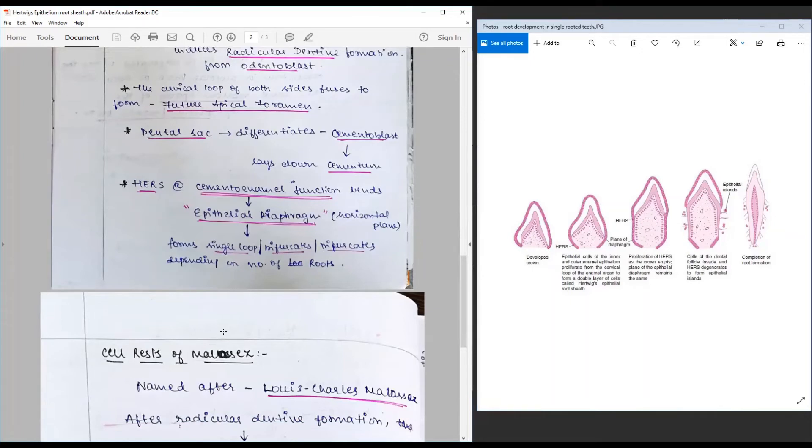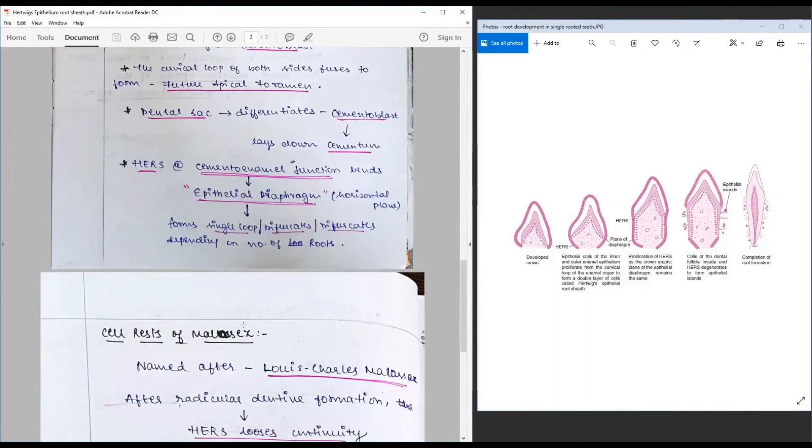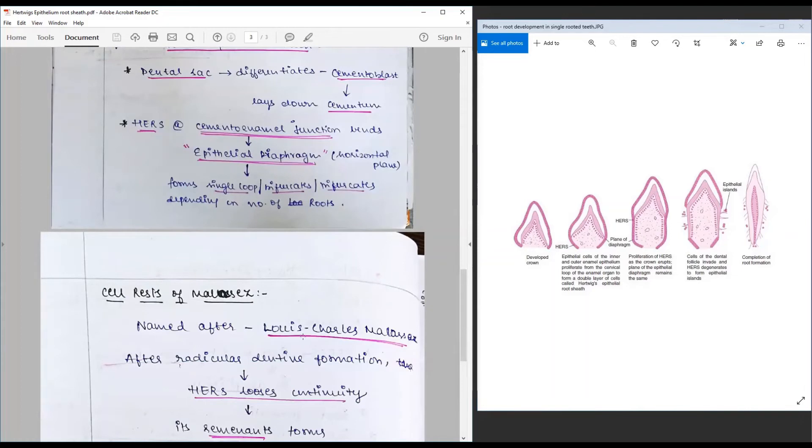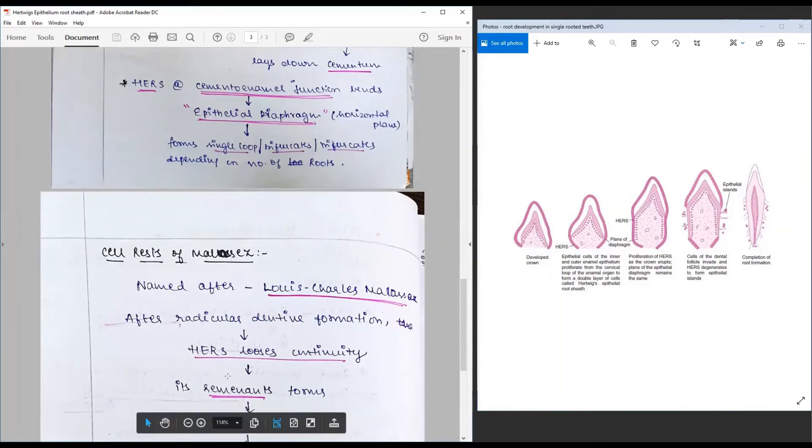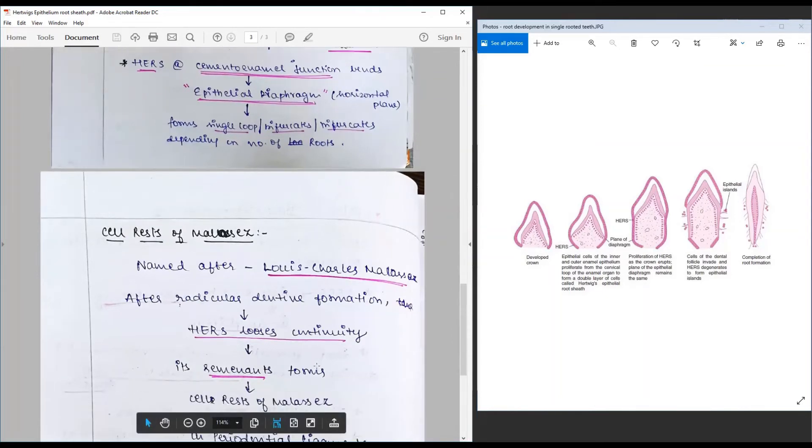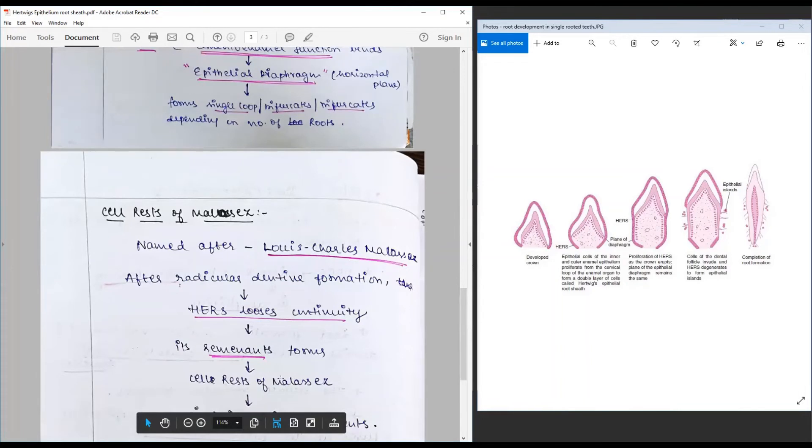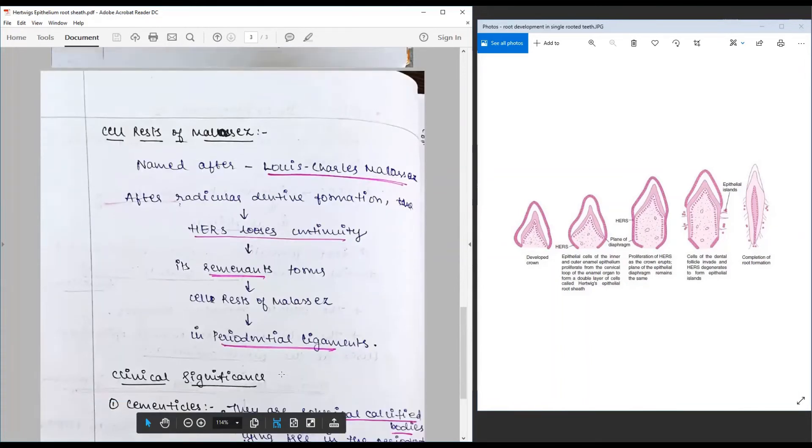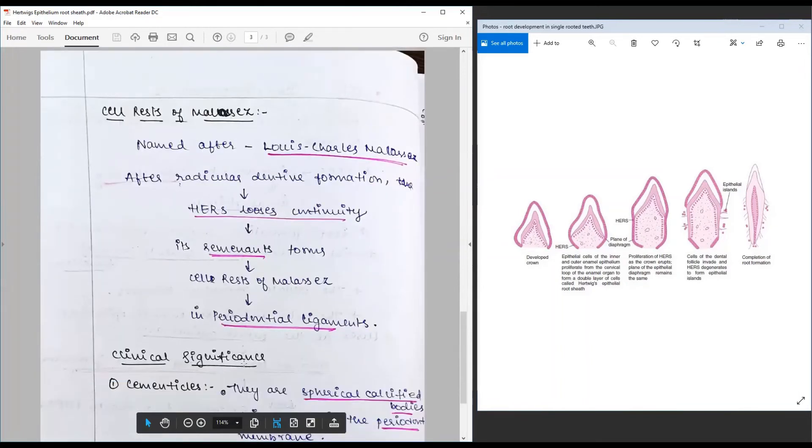May survive in adulthood and are found in the periodontal ligament. This is called the cell rests of Malassez and is named after Louis Charles Malassez, who first reported this entity. After radicular dentin formation, the HERS loses its continuity and remnants contribute to the formation of cell rests of Malassez and lie in the periodontal ligaments.